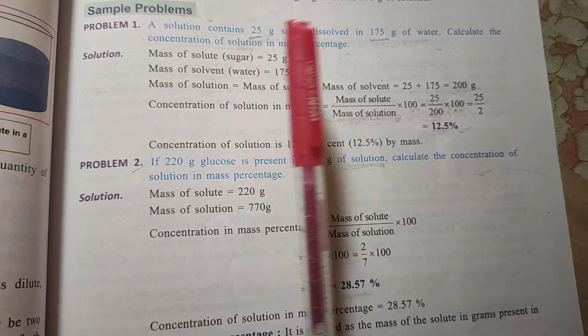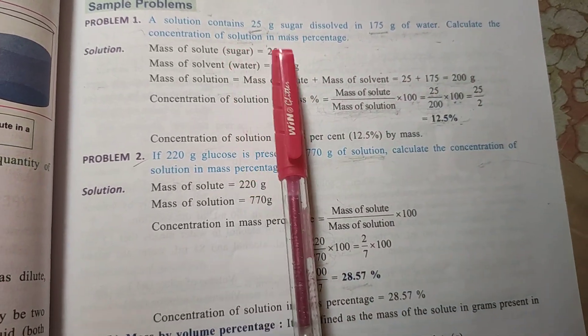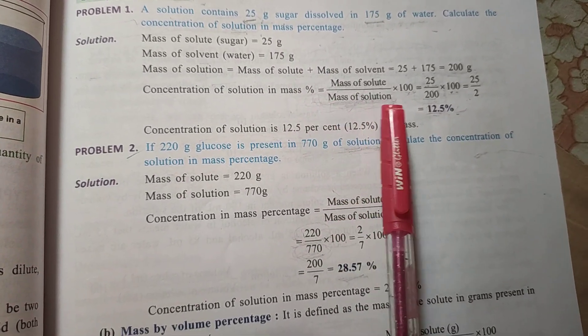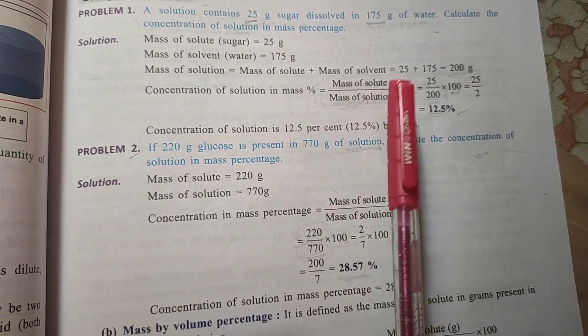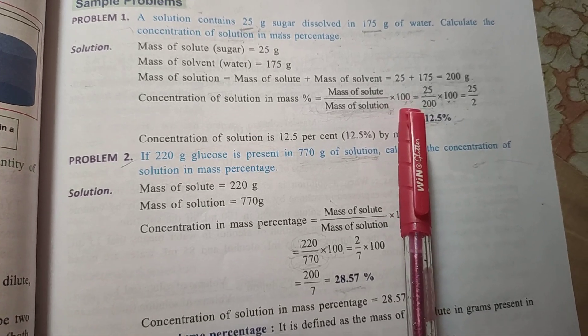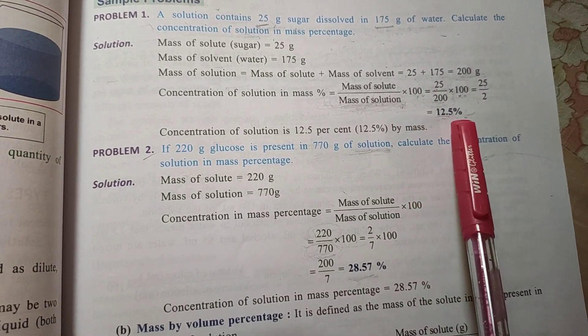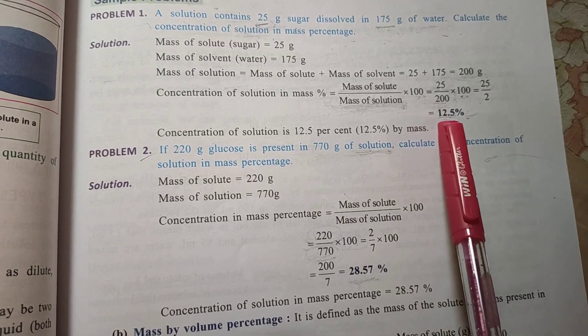To calculate the concentration of solution, first we are going to write mass of solute divided by mass of solution times 100. After solving this, the amount will be our mass percentage.